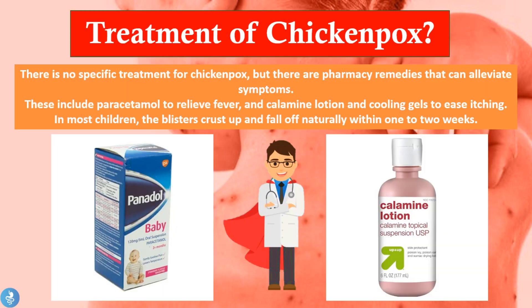Finally, let's talk about the treatment of chicken pox. There is no specific treatment for chicken pox but there are pharmacy remedies that can alleviate some symptoms. These include paracetamol to relieve the fever and calamine lotion and cooling gels to ease the itching. In most children the blisters crust up and fall off naturally within one to two weeks. We can treat symptomatically — using an antipyretic drug for fever, and calamine lotions or antihistaminic gels to ease the patient's intense itching and decrease anxiety.